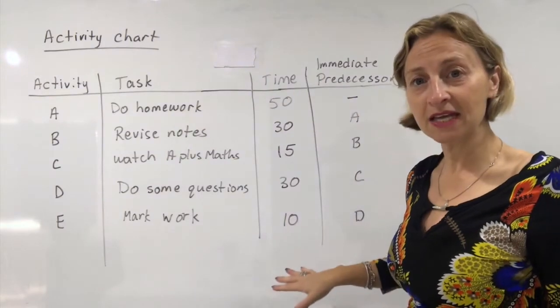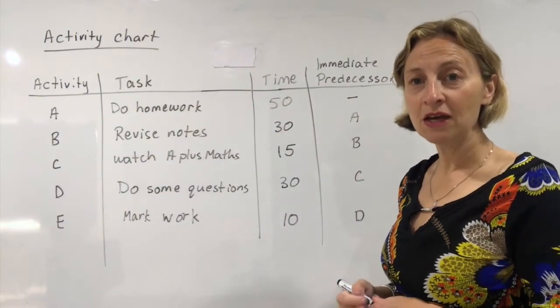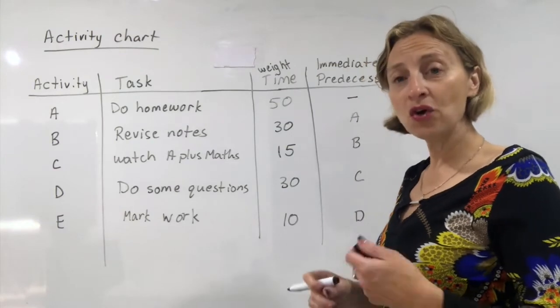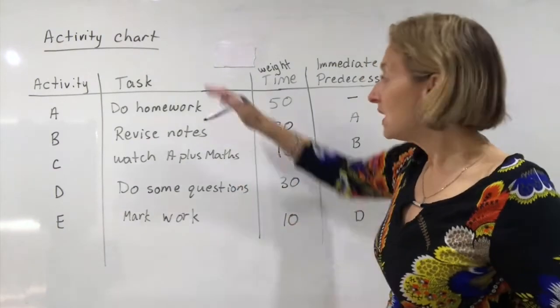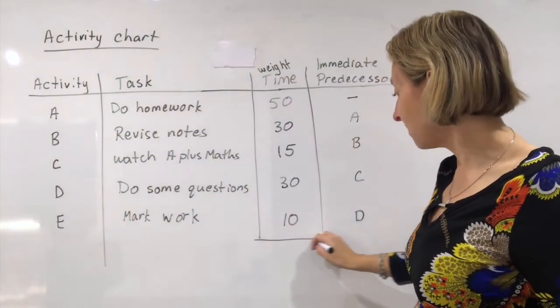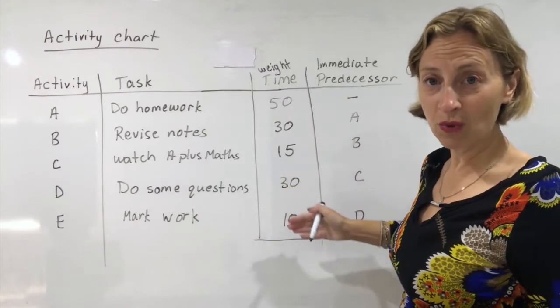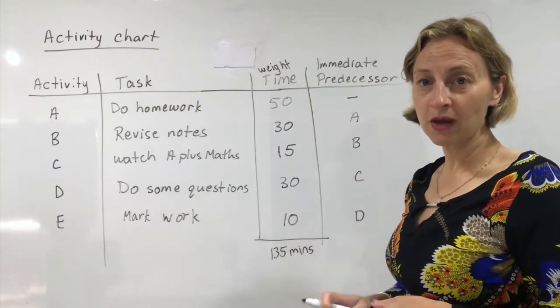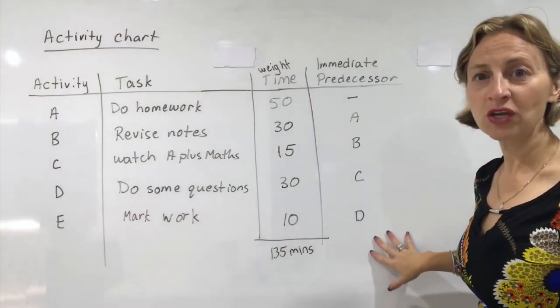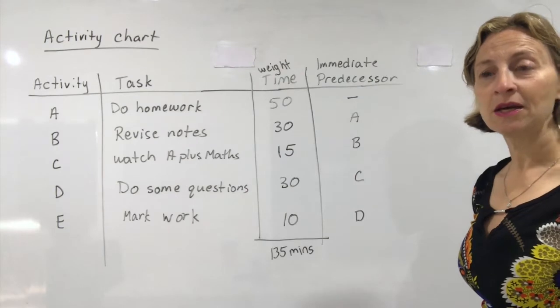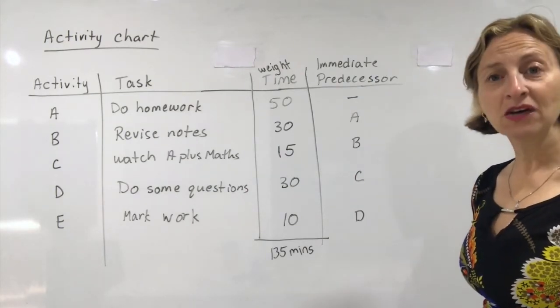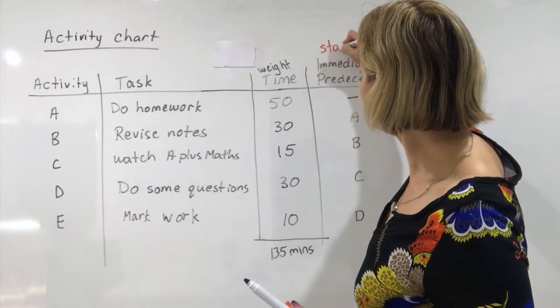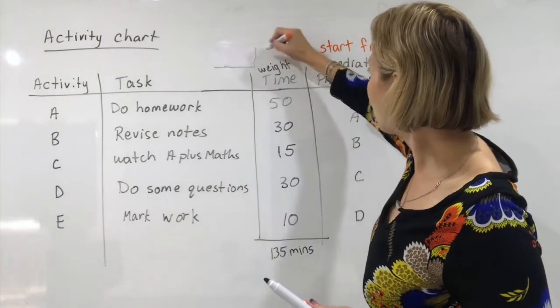Over here it tells you the time that it takes to do each activity. Remember the time would be the weighting on each of our edges. And the total time to do the entire activity would be the sum of all the times, because we would need to go through each one to finish. That would be 135 minutes total. And then over here, this is probably the tricky part, is what's called an immediate predecessor. An immediate predecessor tells us where we need to start from. I like to think of this as start from here and we go to here.